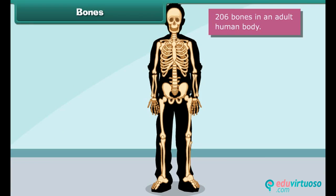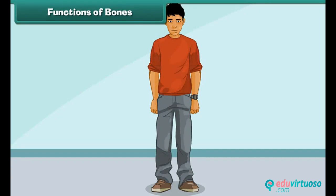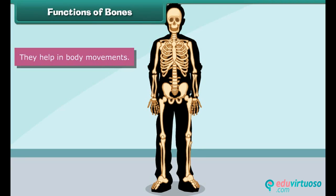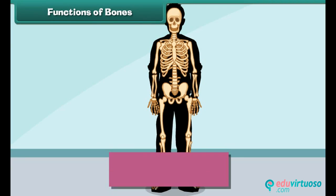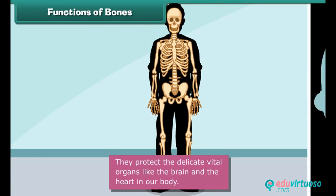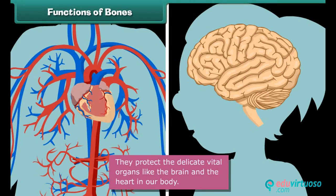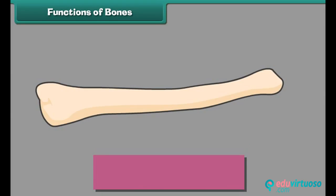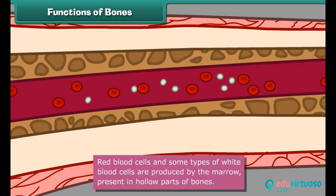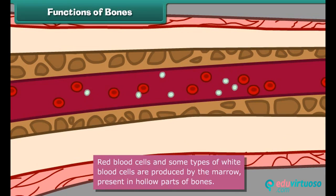What functions do bones perform? Bones give shape and support to the body. They help in body movements. They protect the delicate vital organs like the brain and the heart. Red blood cells and some types of white blood cells are produced by the marrow present in the hollow parts of the bones.